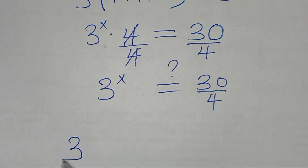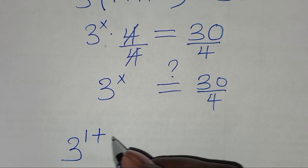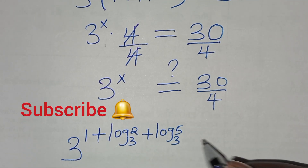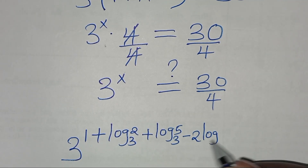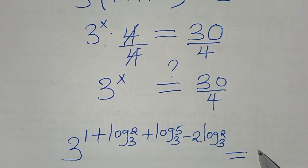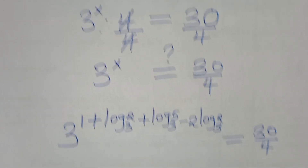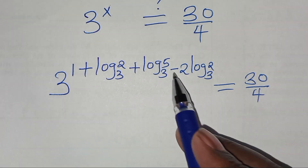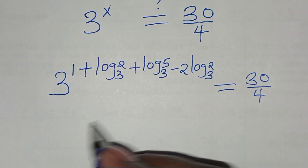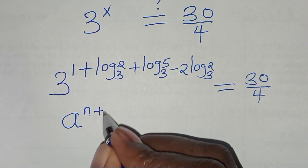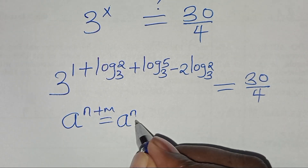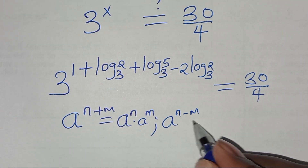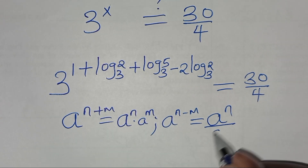So we have 3 to the power x, which is 1 plus log₃2 plus log₃5 subtract 2 log₃2. This is supposed to give us 30 over 4. Now 3 to the power (1 + log₃2 + log₃5 − 2 log₃2) is in the form of a to the power (n plus m), which we can express as a^n times a^m, and also in the form of a to the power (n minus m), which is a^n over a^m.